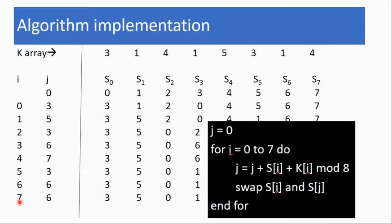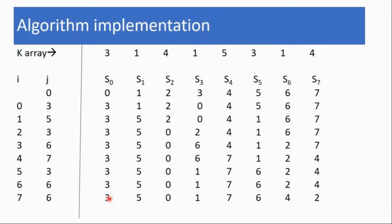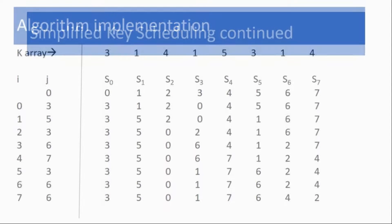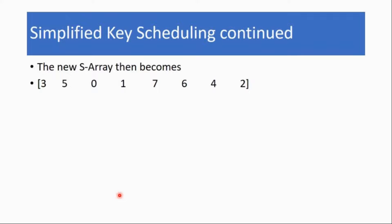In the actual algorithm we go from 0 all the way up to 255, which is more exhaustive, but this is just the simplified version. When you complete all the iterations you arrive at the final S-array — this is the result of the key scheduling algorithm.